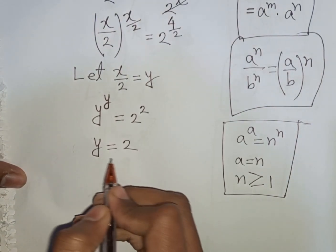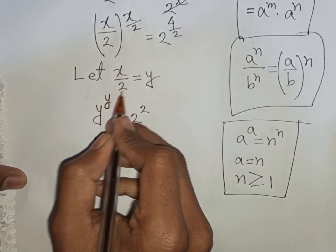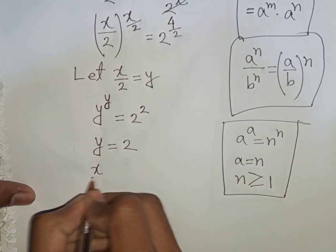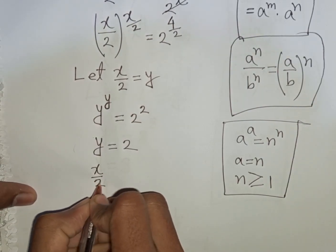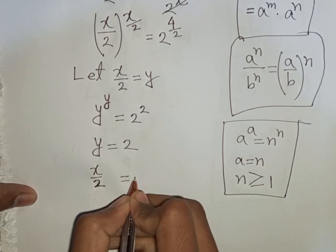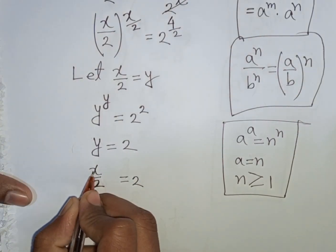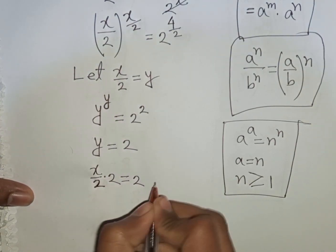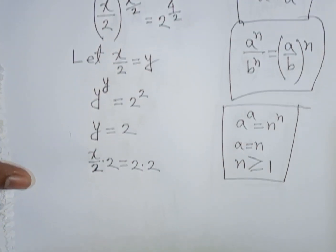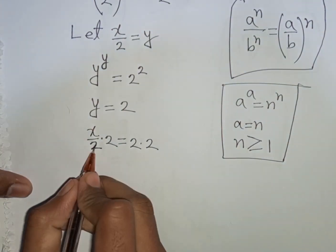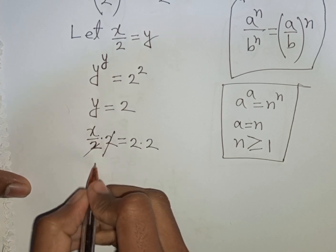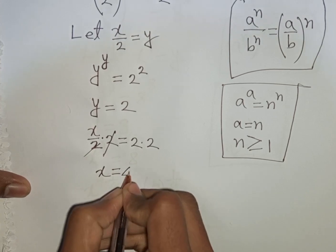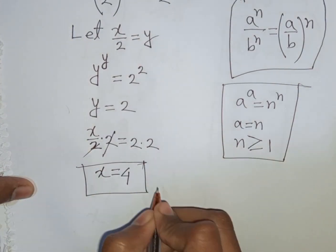But remember that x by 2 was substituted by y. So y means x by 2 is equal to 2. Now we need the value of x, so we multiply by 2 on both sides. This 2 will be cancelled, so x will be equal to 2 multiply by 2 — that means it will be 4. So x equals 4, this is our final answer.